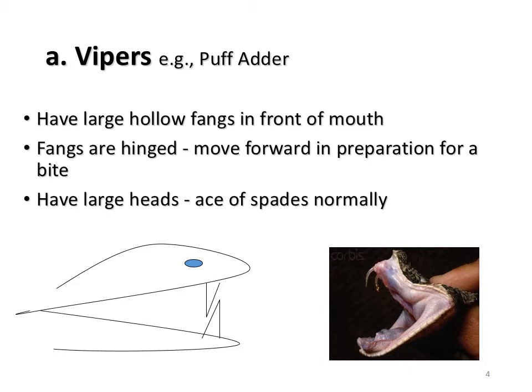Cytotoxic refers to tissue-damaging, and all the snake groups mentioned are associated with this type of envenomation. Looking at vipers, exemplified by the puff adder: they are stocky snakes with front fangs at the front of the mouth through which venom is delivered. The fangs are hinged, folding downwards when the mouth is closed and only rising in preparation for a bite. Most vipers have large, ace-of-spades-shaped heads.